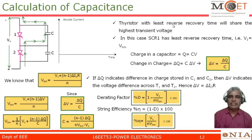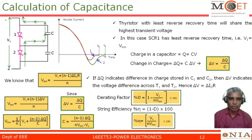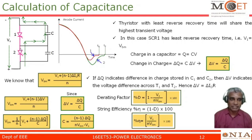The thyristor with the least reverse recovery time will share the highest transient voltage. Let us assume that thyristor T1 has a recovery time of T1 whereas thyristor T2 has a recovery time of T2. Thyristor T1 has the least recovery time, so it can share the highest transient voltage. Because of that, this thyristor may get damaged much faster compared with the other. We have to avoid this condition, for which we put a capacitance across the thyristors.